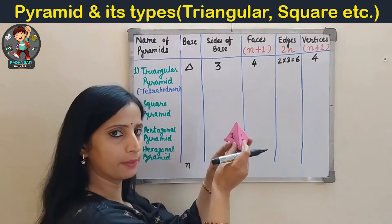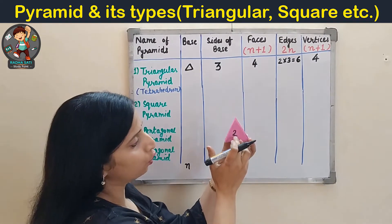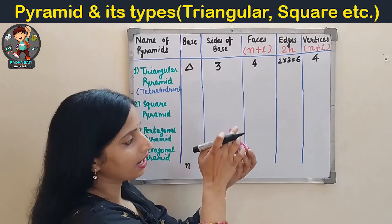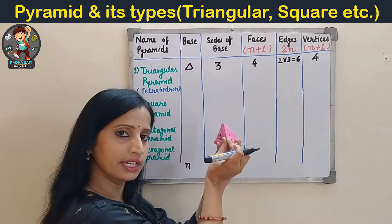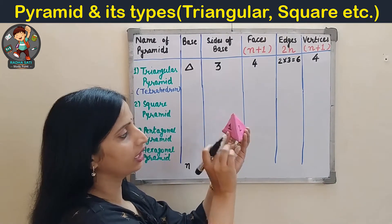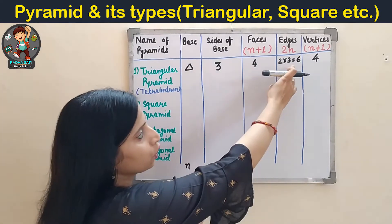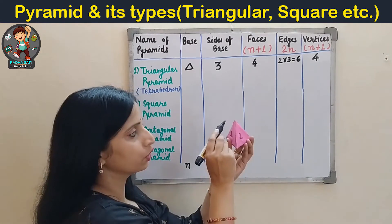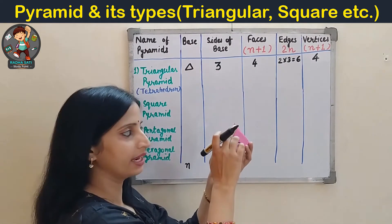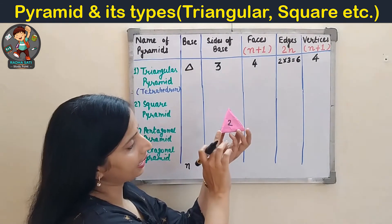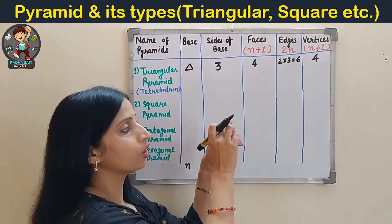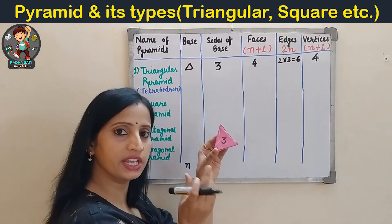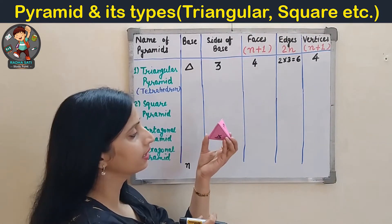Let us verify with this pyramid. Counting the faces: 1, 2, 3, 4. So 4 faces. Edges are the line segments where two faces meet: 1, 2, 3, 4, 5, 6. So 6 edges. Vertices are the corners where two or more edges meet. This top point is also the apex. Counting: 1, 2, 3, 4. So 4 vertices. In a triangular pyramid there are 4 faces, 6 edges and 4 vertices.